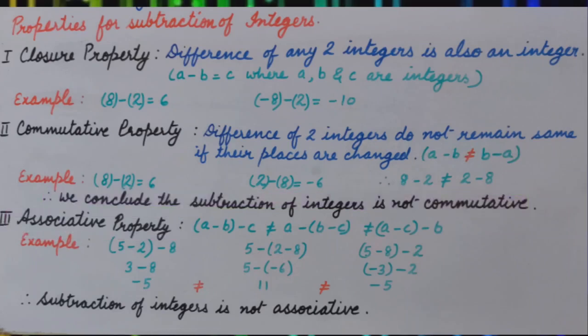Third property is associative property. In associative property, we make different groups. So if we have three integers, 5, 2 and 8, we can make the group of 5 and 2. When we subtract 5 minus 2, then it is 3. And when we subtract 8 from 3, that is minus 5.